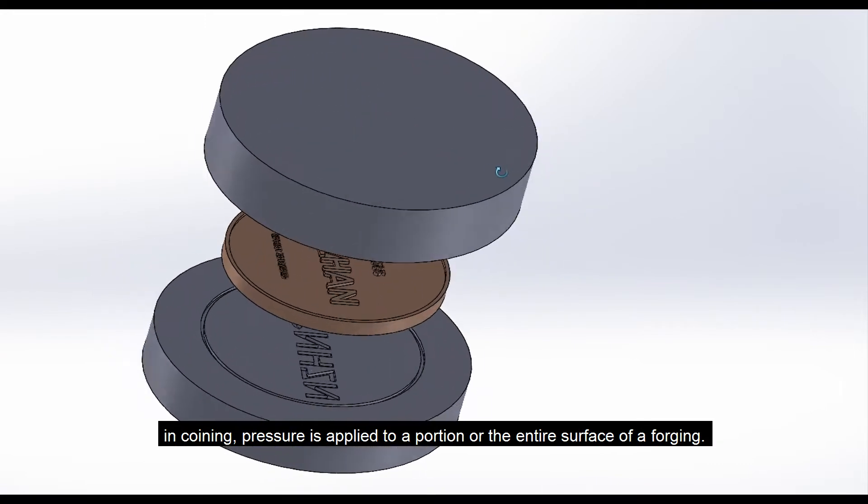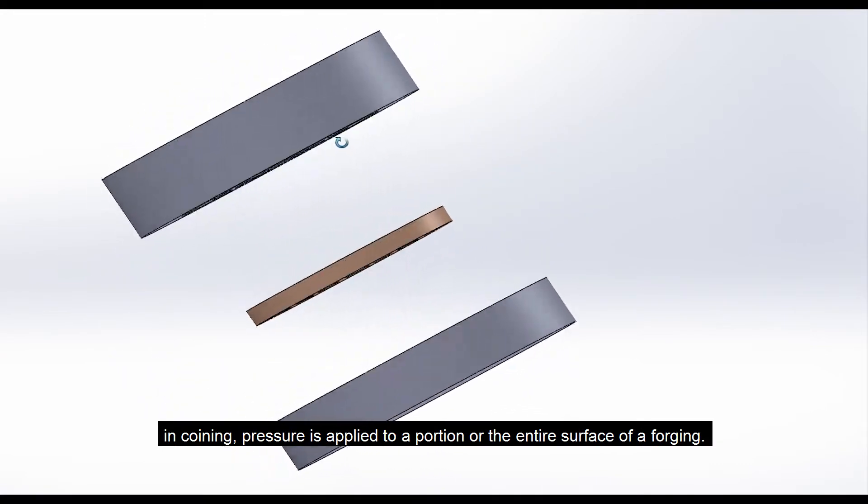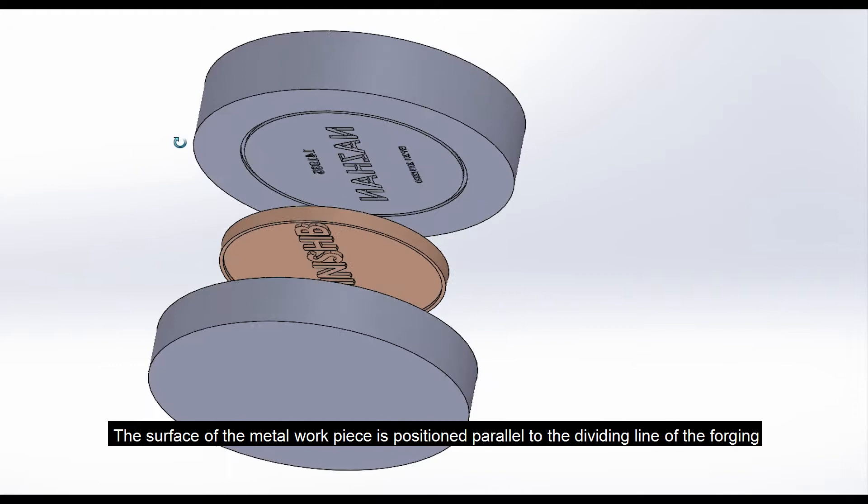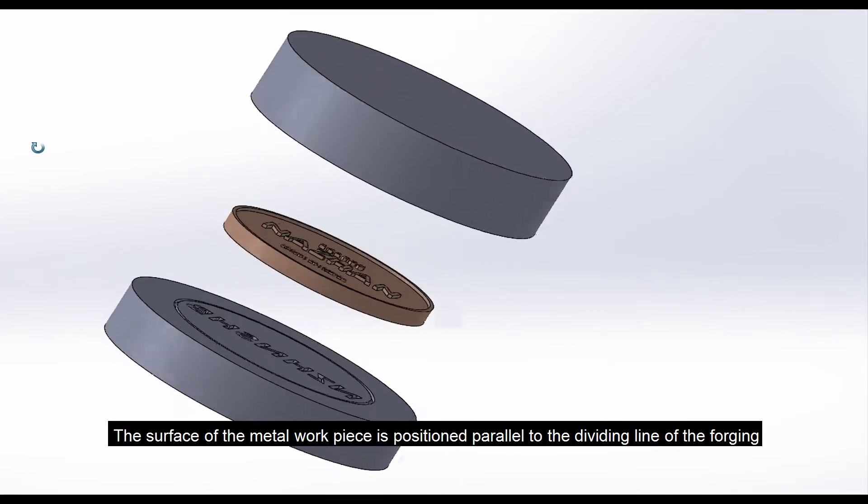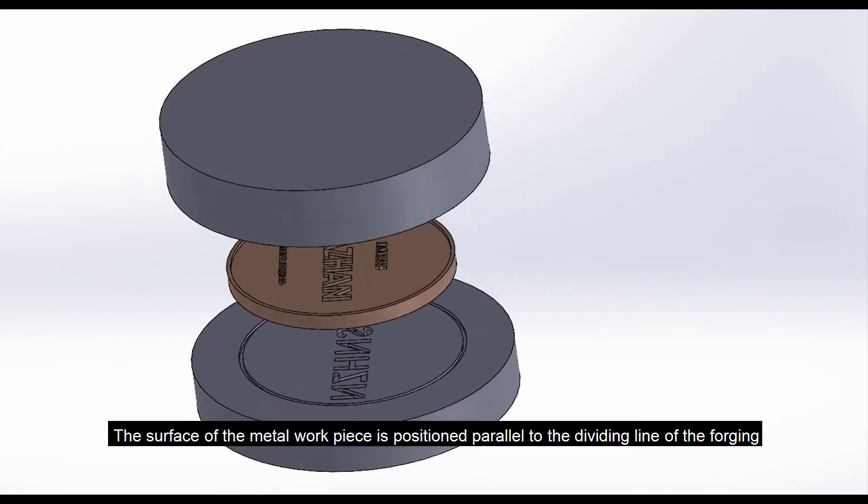In coining, pressure is applied to a portion or the entire surface of a forging. The surface of the metal workpiece is positioned parallel to the dividing line of the forging.